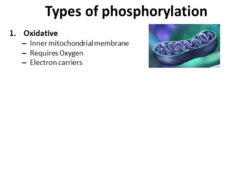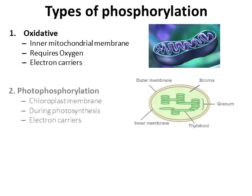Oxidative phosphorylation: you're going to learn a lot more about this in the next video about respiration. Oxidative phosphorylation takes place in the mitochondria. As given in the name, it requires oxygen, and it uses electron carriers — an electron transport chain as you've also learned about.